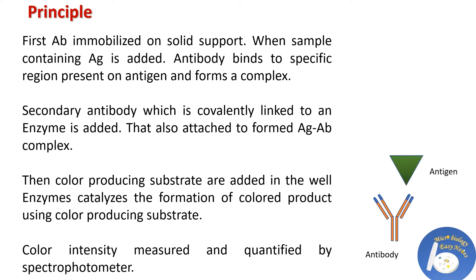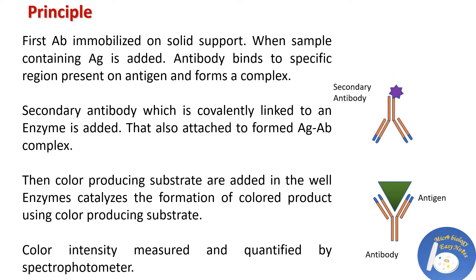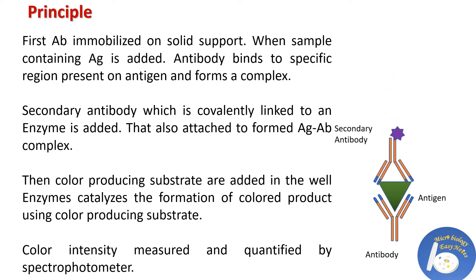Then the sample containing antigen is added. If the antigen has a specific region against this particular antibody, it will bind to it and form the antigen-antibody complex. Then a secondary antibody, which is linked to an enzyme, is added. That secondary antibody will bind to that antigen-antibody complex. After that, a color-producing substrate is added, which reacts with the enzyme and produces a particular color.